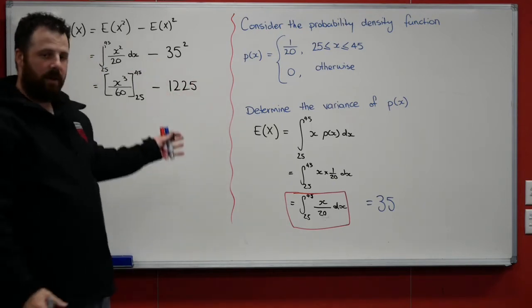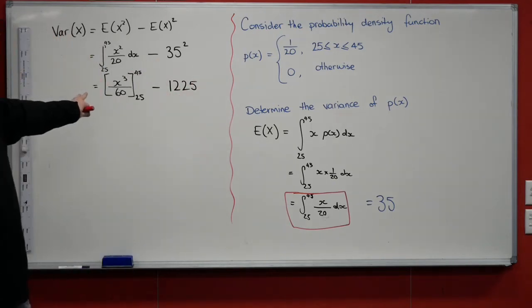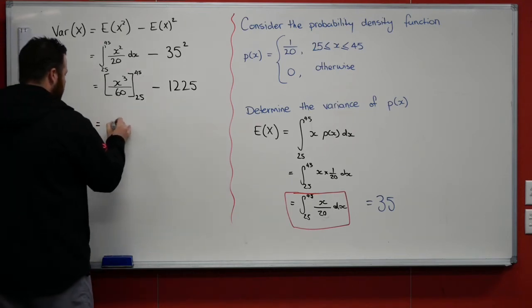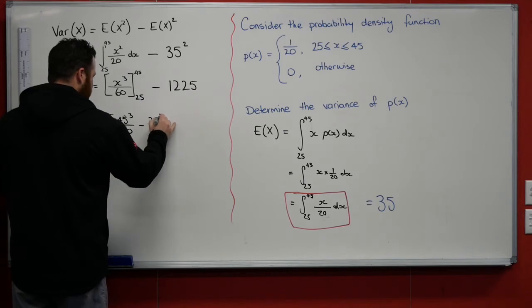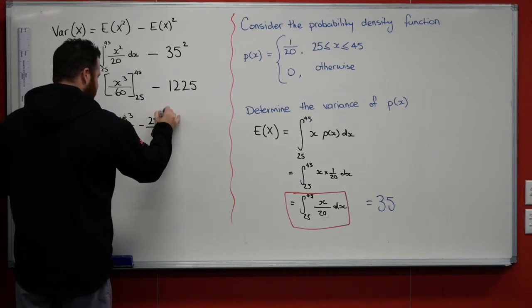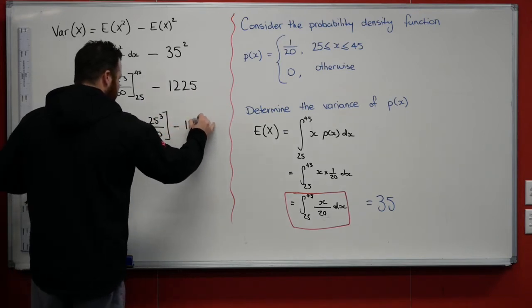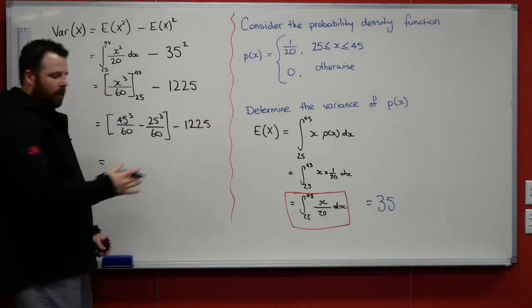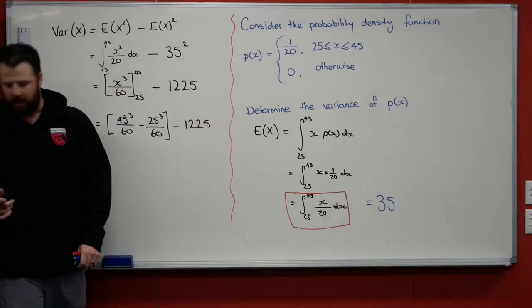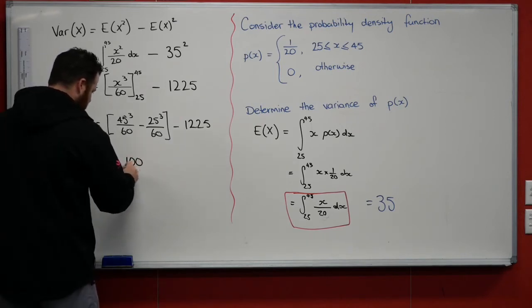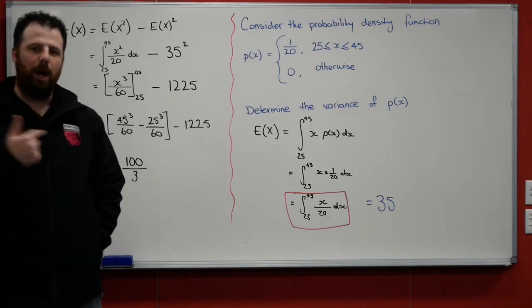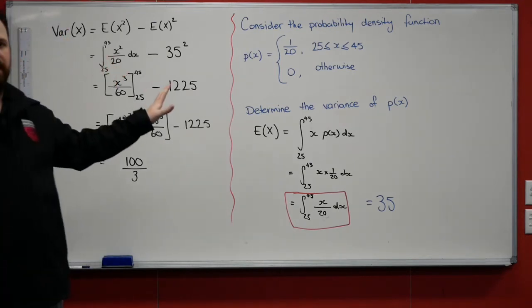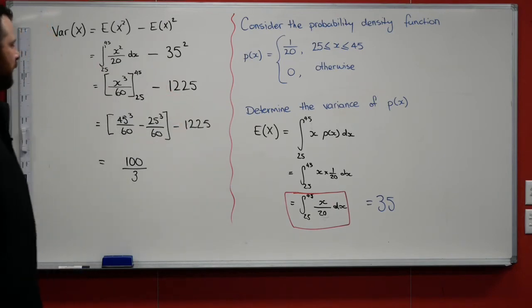So now what we need to do to find the variance is to now just complete this evaluation. So what we have is 45 cubed/60 minus 25 cubed/60 minus 1,225. When we evaluate that, we get 100/3. So the expected value of this probability density function was 35.